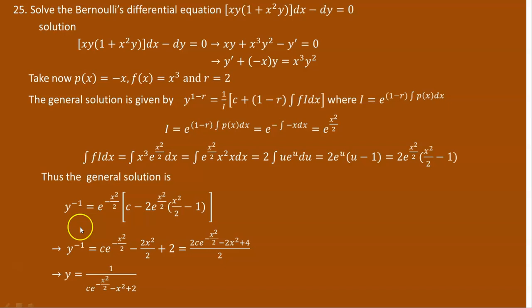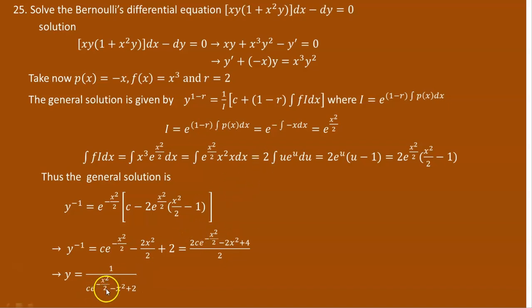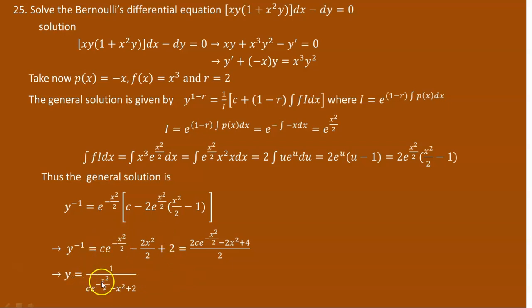Taking the reciprocal of 1 over y gives y, so we also take the reciprocal of the right-hand side. We can factor out 2 as a common factor throughout: dividing each term by 2 simplifies the expression. The final simplified general solution is y equals 1 divided by the quantity (c times e to the power of negative x squared over 2 minus x squared plus 2). This is how we solve differential equations of Bernoulli's kind.